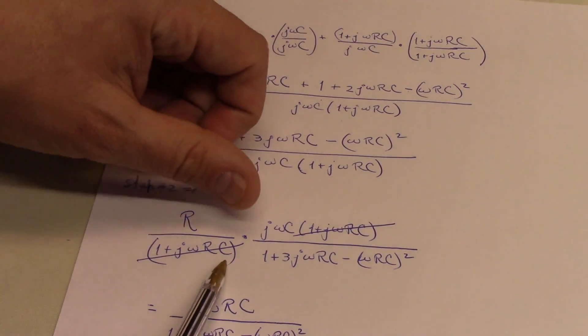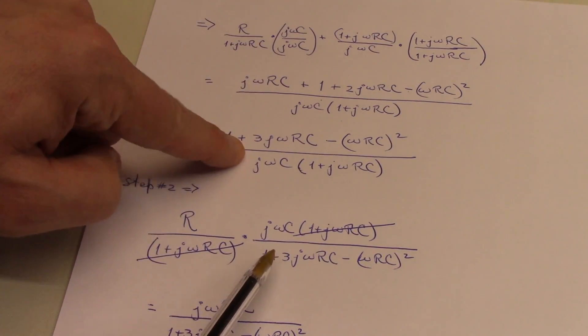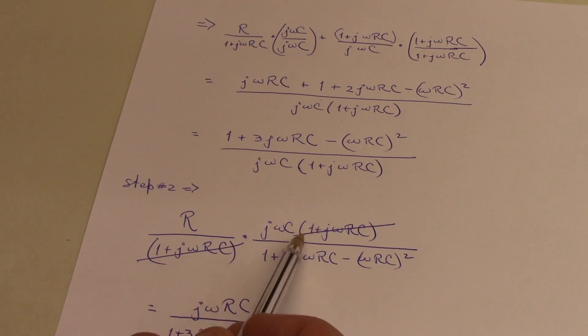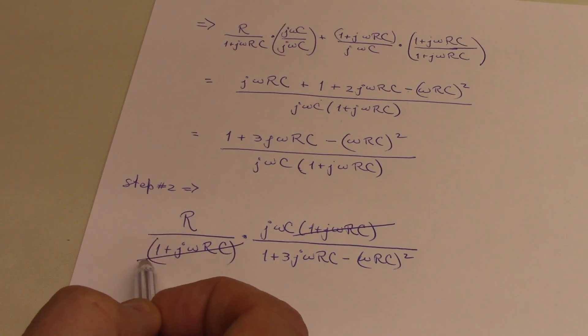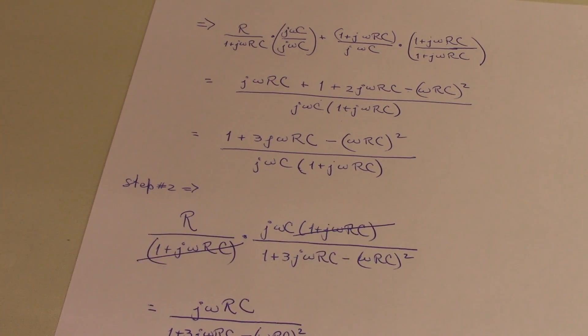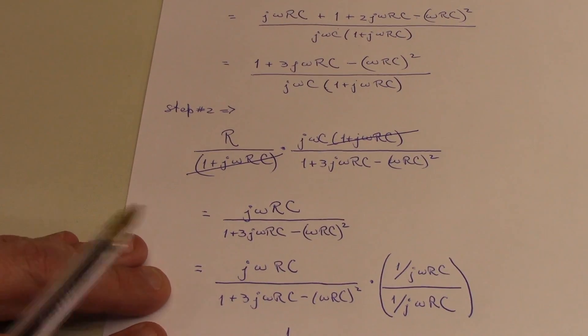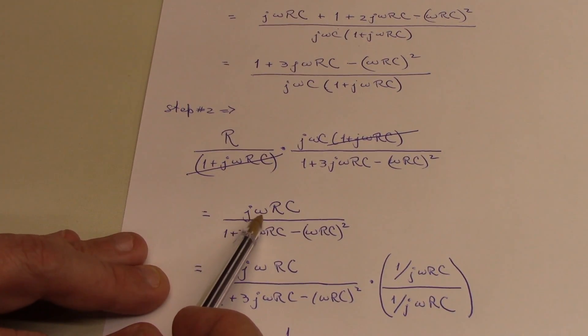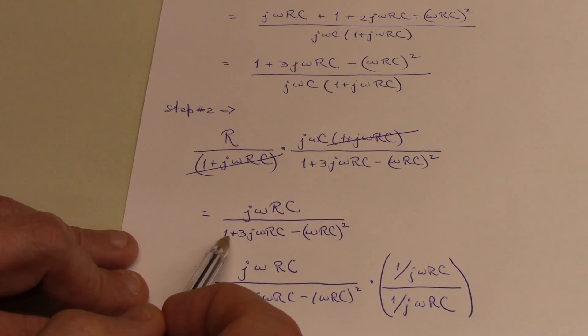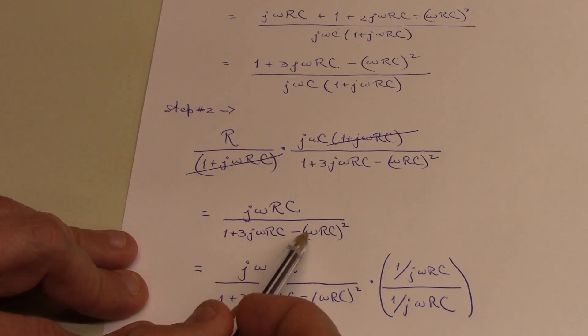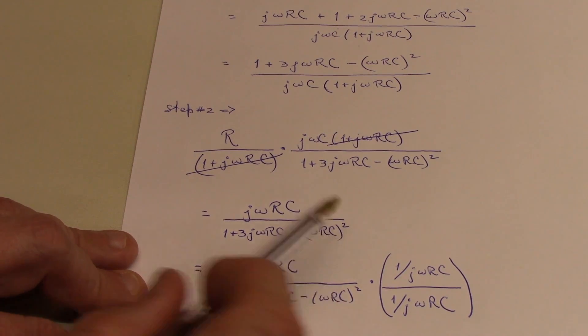And then the denominator now, I invert this and multiply. So it's times j omega c times 1 plus j omega rc all over 1 plus 3 j omega rc minus quantity omega rc squared. And notice that this factor and this factor divide out, leaving me now with a j omega rc upstairs divided by 1 plus 3 j omega rc minus quantity omega rc squared.